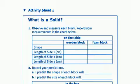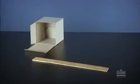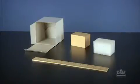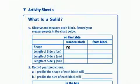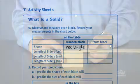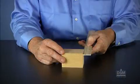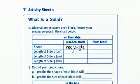Hand out a copy of Activity Sheet 1 to each student and give each team of two a ruler and a box, and either a wooden or foam block. Instruct students to place the block on the table and observe and record its shape. Then, have students measure the length of three different sides and record their measurements on their Activity Sheets.